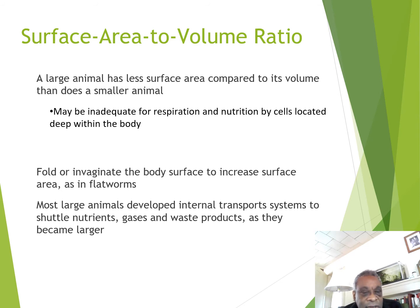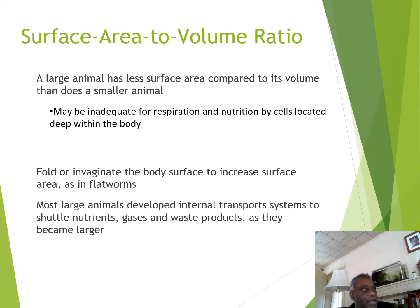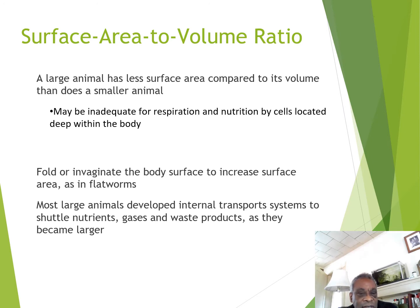As you move further along the evolutionary track, animals begin to develop folds or invaginations to the body surface that increase surface area and allow cells deep in the interior to get access to oxygen and nutrients. You also see the evolution of internal transport systems — think of kidneys or the digestive system — where the surface area of internal organ systems gets much larger to more efficiently shuttle nutrients, gases, and waste products.